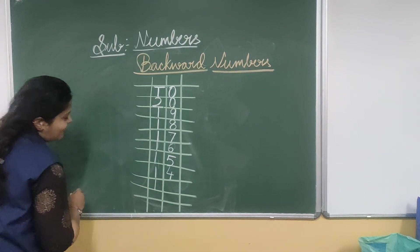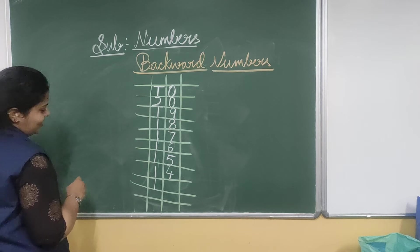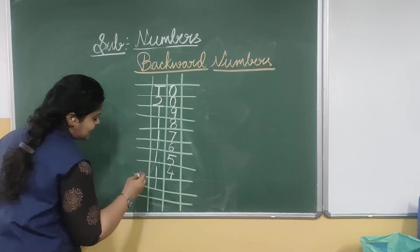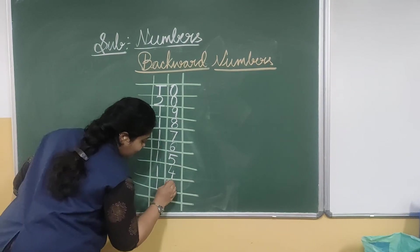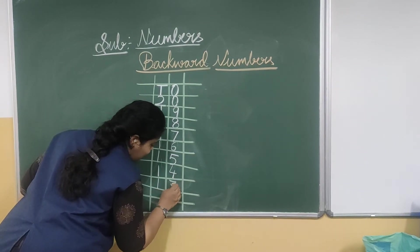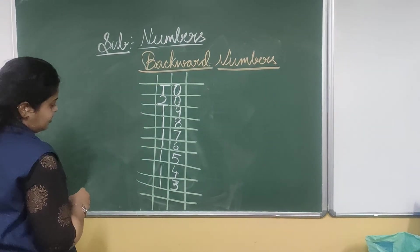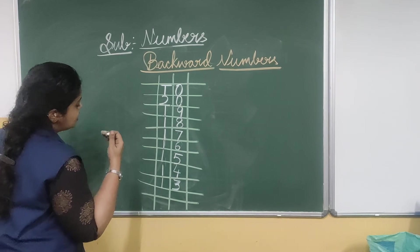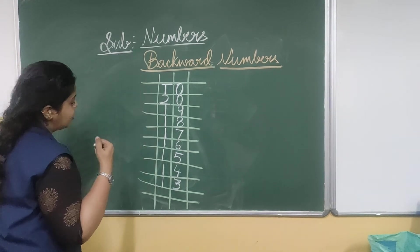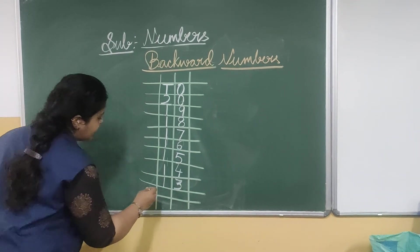So write 1 under the 10's place. And 4 before it is 3. That is 1, 3 — 13. So 14 before is 13.